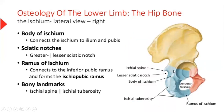Moving forward to the ischium. The body of ischium is connected to the ilium and pubis. It has two sciatic notches: this is the lesser sciatic notch and this is the greater sciatic notch. Then we have a ramus forming the ischiopubic ramus. For landmarks, we have an ischial spine and an ischial tuberosity.